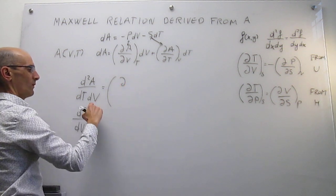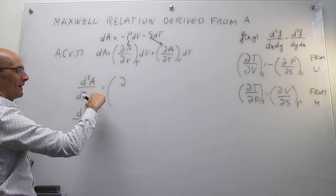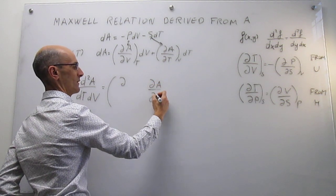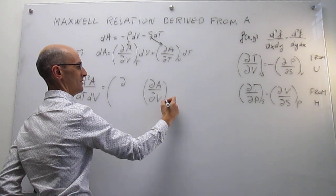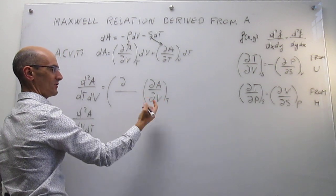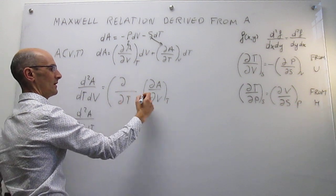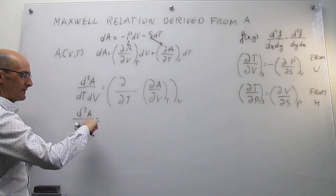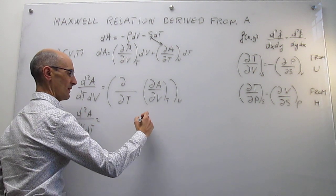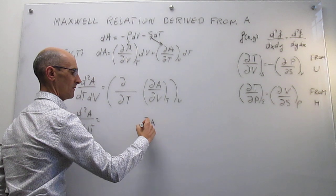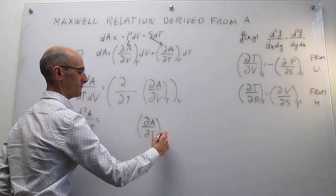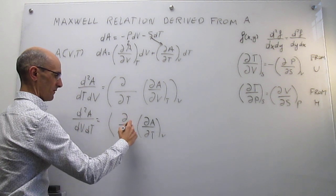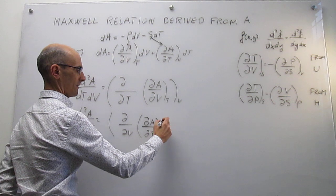More explicitly, along the first path we take the first derivative of the Helmholtz energy with respect to volume at constant temperature, and then we take the derivative of that result with respect to temperature at constant volume. Along the second path, we first differentiate with respect to temperature at constant volume, and then differentiate with respect to volume at constant temperature.